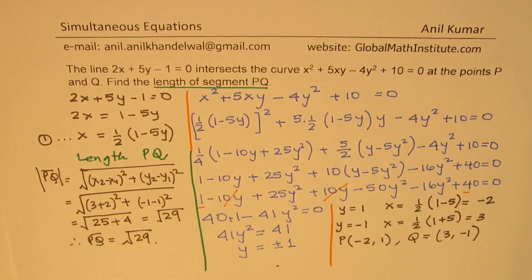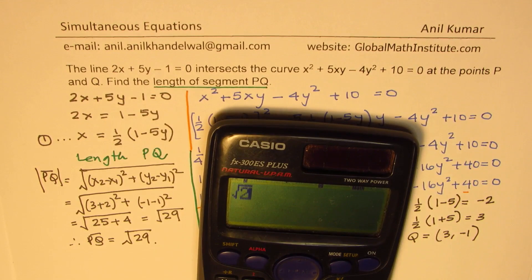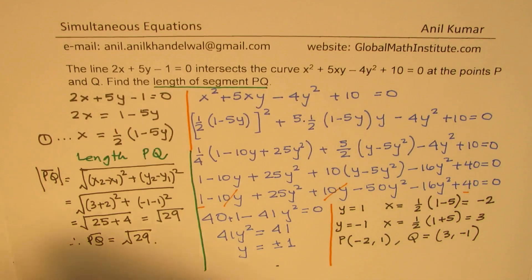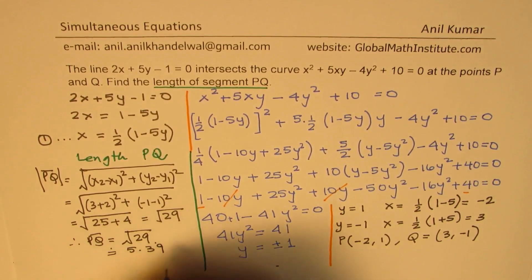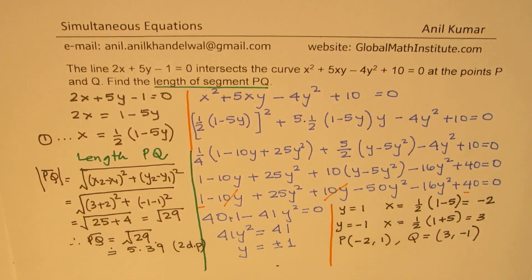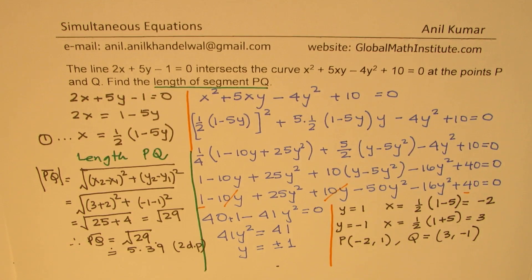That becomes the exact solution. If you need to find it to two decimal places, you can use a calculator. The square root of 29 in decimals is approximately 5.39 to two decimal places. So that is how we can solve this question — it does involve a lot of calculations, showing how a linear versus nonlinear system of equations works. Feel free to write your comments, share your views, and if you like and subscribe to my videos, that'd be great. Thanks for your time and all the best.